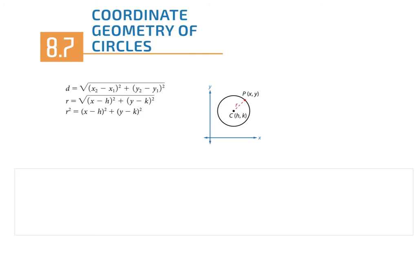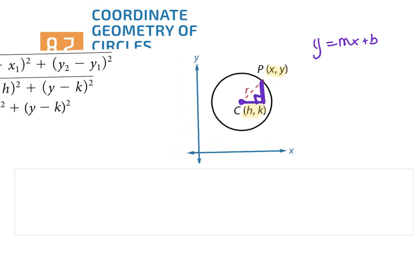Now recall the Pythagorean theorem. They've drawn a circle on the coordinate plane with center at (h, k) and a point on the circle. If I draw from the center out to that point, I create a right triangle. In the right triangle, a² + b² = c². Subtracting my two x-values gives one base; subtracting the y-values gives the other base. If I take the square root, I get the hypotenuse — which is the radius of the circle.